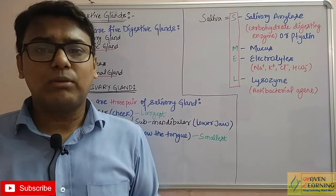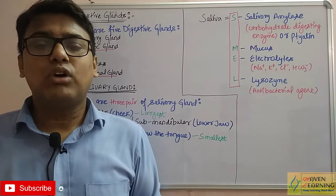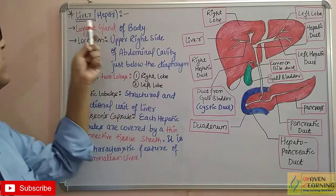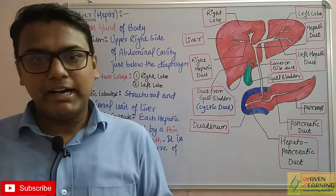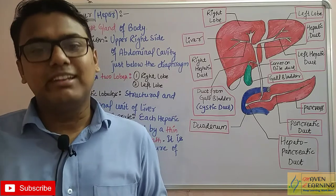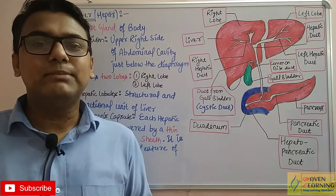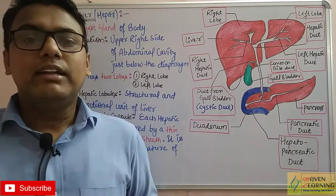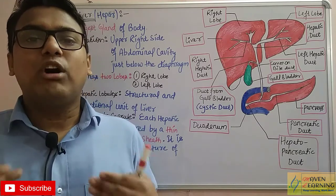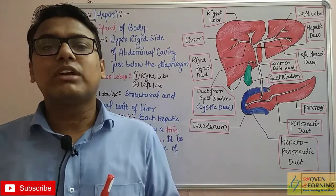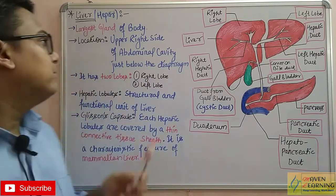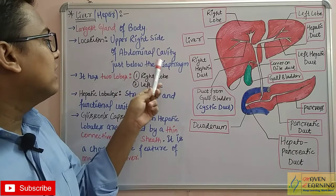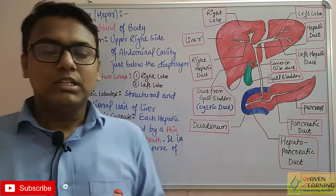Salivary gland is a small topic, so we will cover only this much. Next is the liver. 'Hepar' or 'hepato' means liver. The liver is the largest gland of our body. Its location is the upper right side of the abdominal cavity, just below the diaphragm.